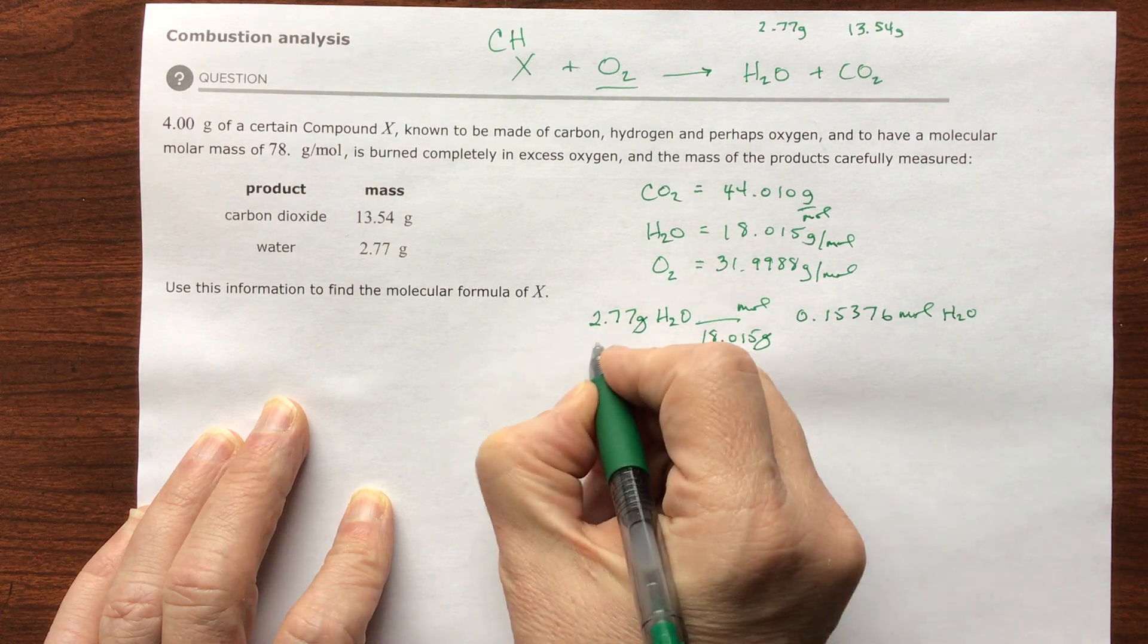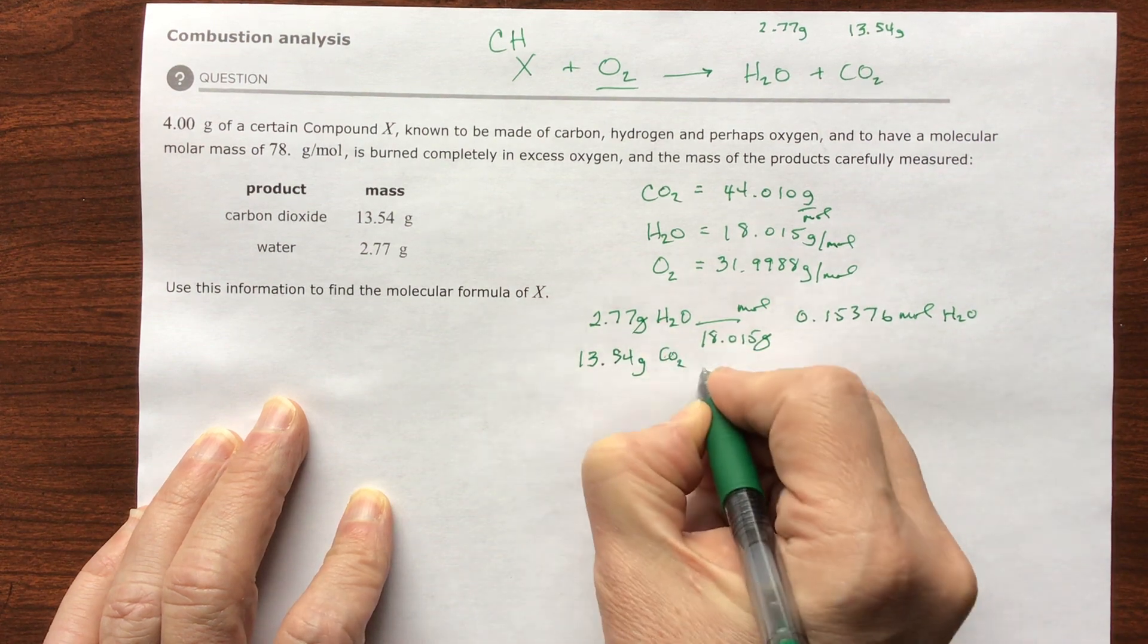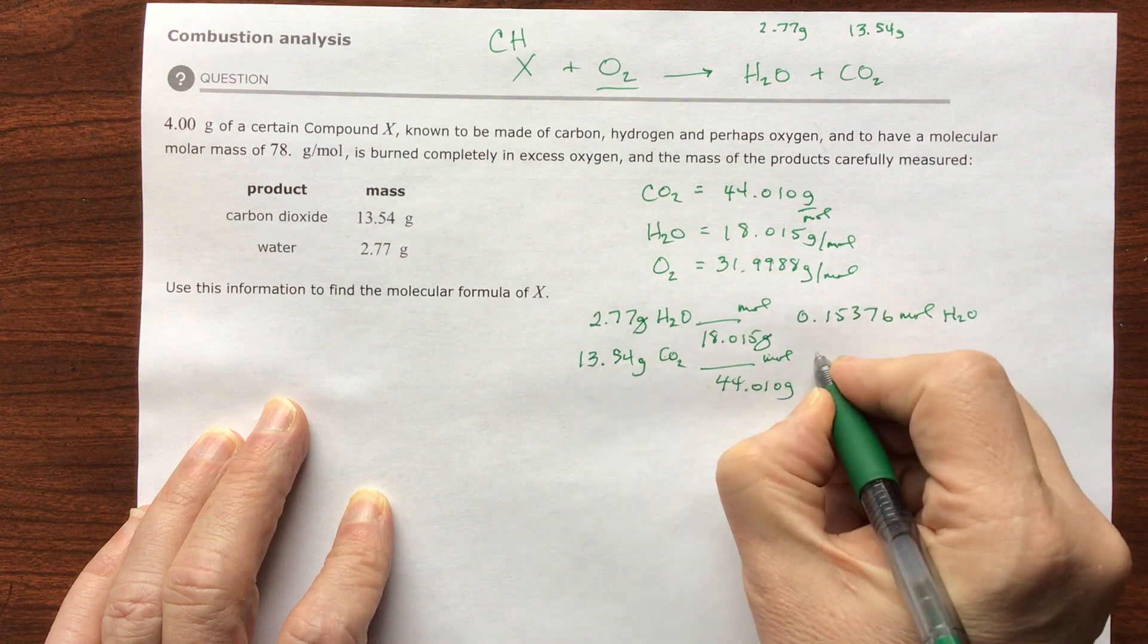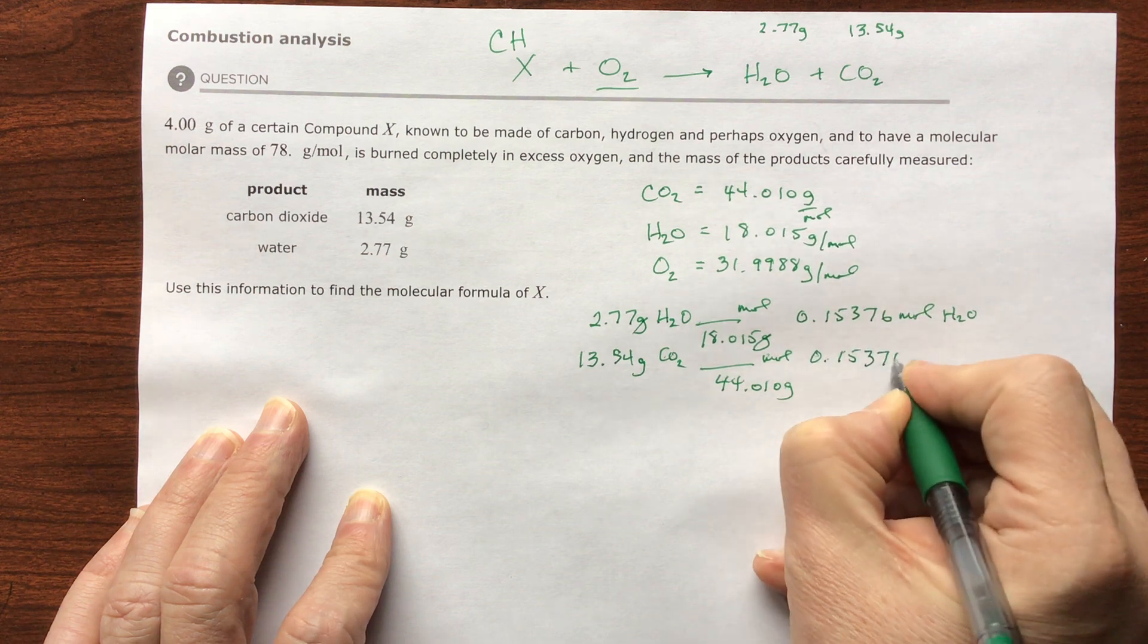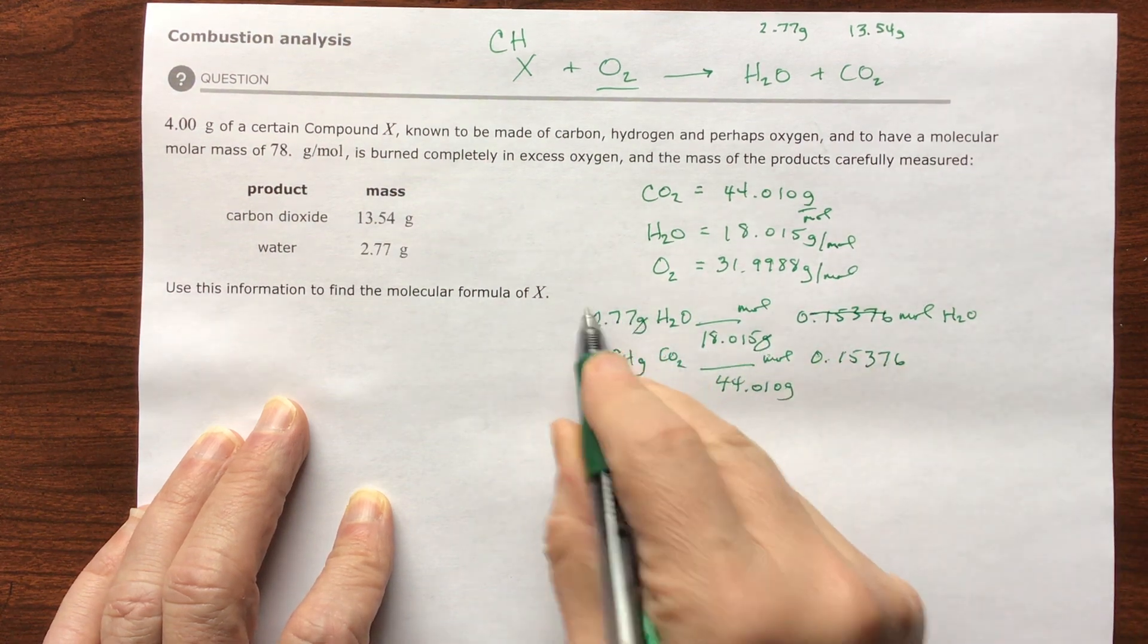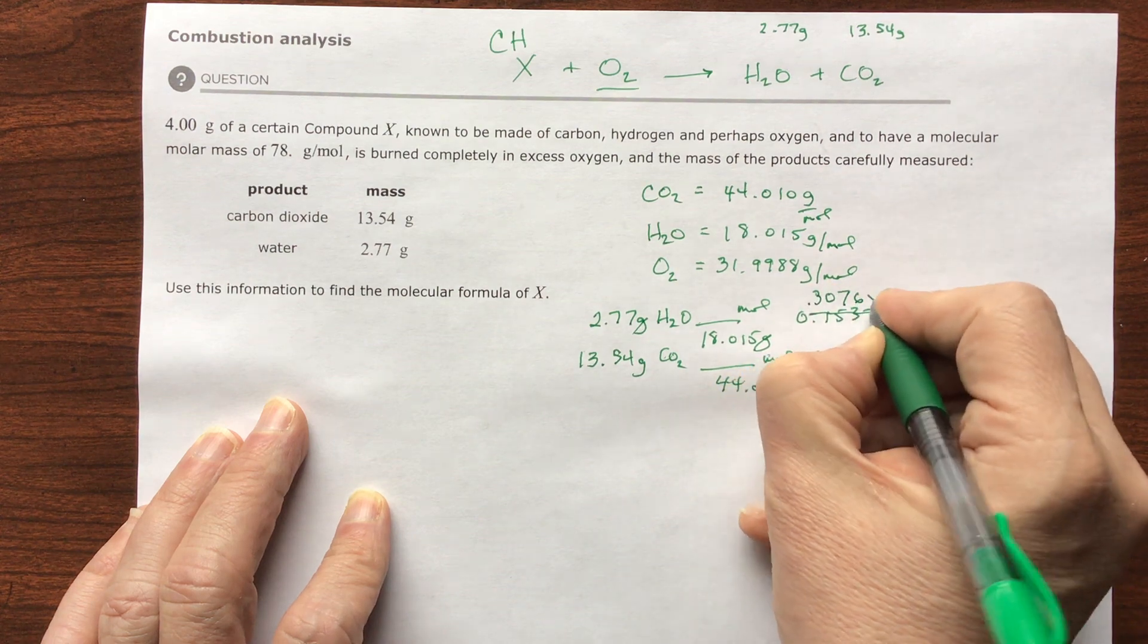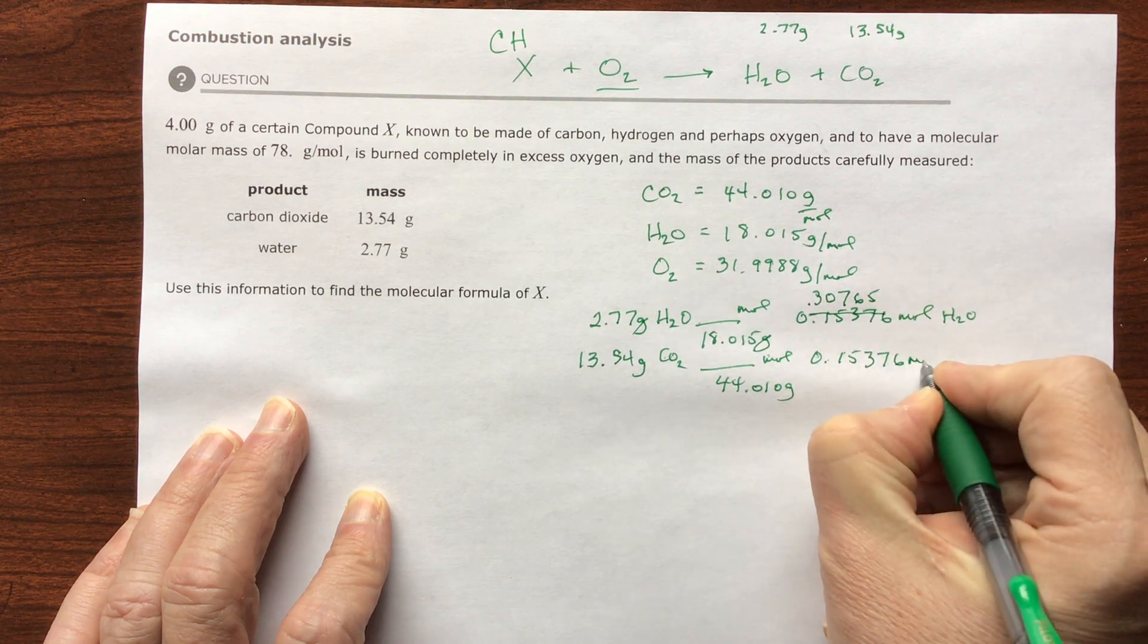Let's do the same thing with carbon dioxide. They gave us 13.54 grams of carbon dioxide. Carbon dioxide was 44.010 grams per mole. When you divide these two numbers, this is 0.30765. Sorry about that, I wrote down the wrong number. That will completely mess you up. This is moles of carbon dioxide.